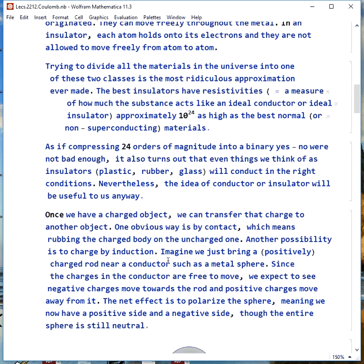If we try to divide all the materials in the universe into one of these two classes, it's a ridiculous approximation. Because if we look at the best insulators, they have resistivities about 10^24 times as high as the best normal non-superconducting materials. So we're taking 24 orders of magnitude, a physical parameter that can range over that, and reducing it to binary.